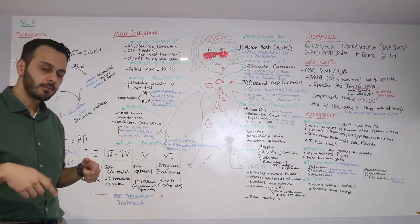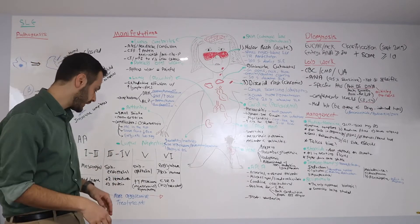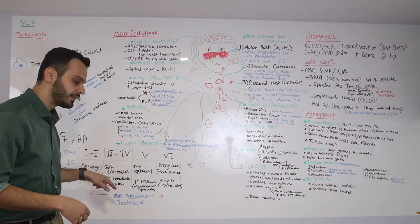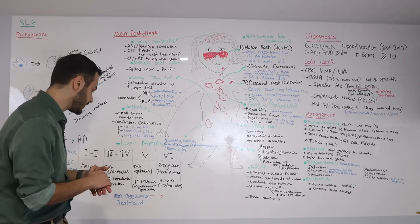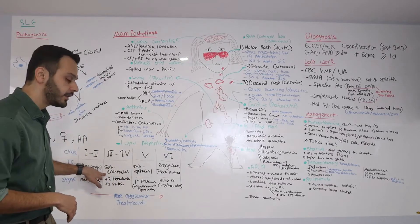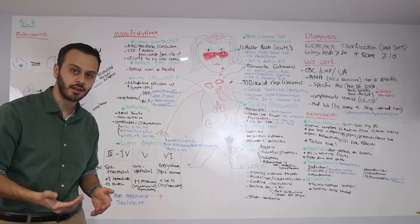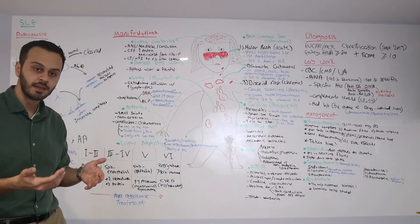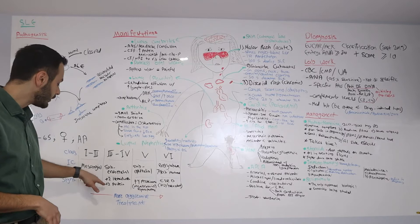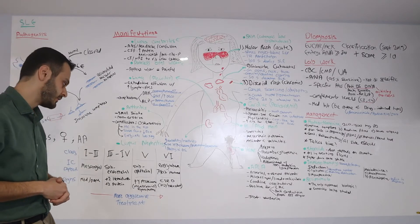Once these immune complexes start to deposit in other areas such as the subendothelial layer, which is very close to the bloodstream, you will start to see more hematuria, more blood being thrown into the urine, and you will also start to see more proteinuria as well.